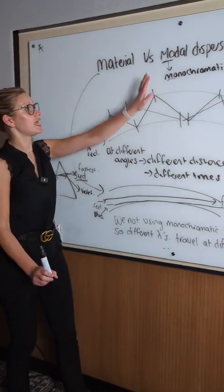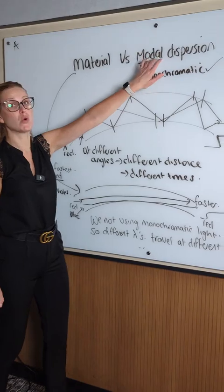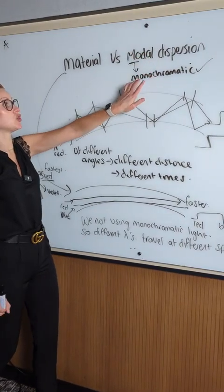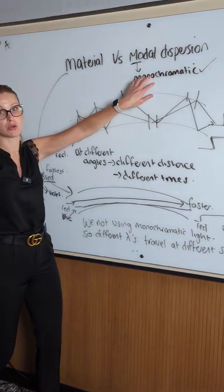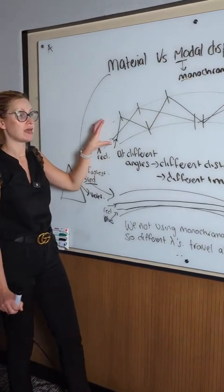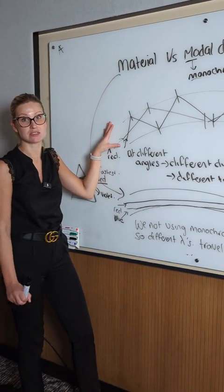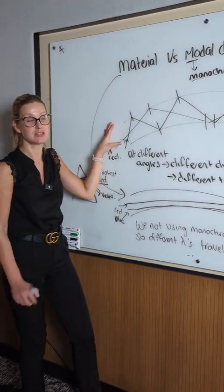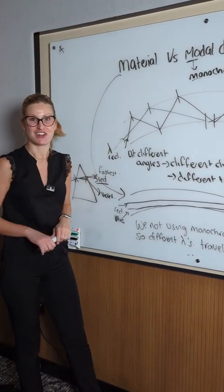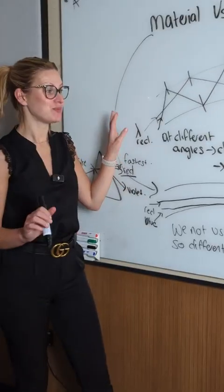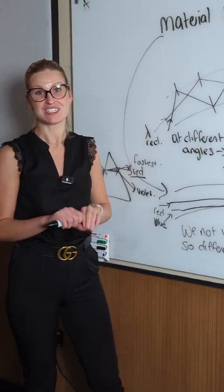Top tip: MO — modal dispersion is when you are using monochromatic light already, so the problem must be because of the angles. That's grand — follow me for more physics content like this.